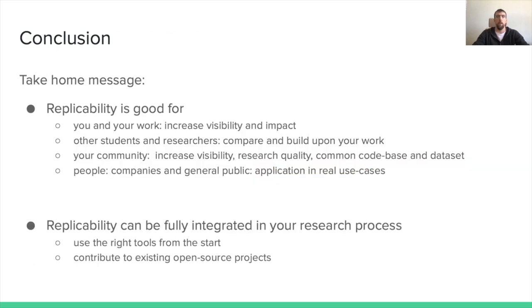We have now reached the end of this presentation. In the first part of this talk, we saw why it is important to favor replicable research: it has a strong impact on the author's and paper's visibility, it accelerates the research process by improving reliability and feedback, and it facilitates comparison while providing code bases and datasets that can be shared across the community. Remember that students, researchers, companies, and even the general public can benefit from it. Releasing code can be time-consuming, so try to develop good habits: keep things simple from the start, use tools and libraries when you need them, control the size and complexity of your code base, provide data and pre-trained models, and write documentation so people know what to do.